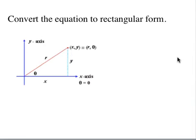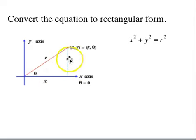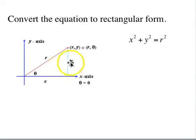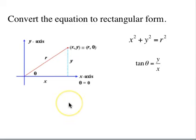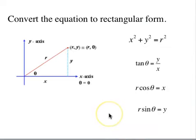Next we want to convert equations to rectangular form. To do that we use relationships between the variables. We have x²+y²=r², and tan θ = y/x, as well as r·cos θ = x and r·sin θ = y. Knowing these four facts, we should be able to do several conversions.